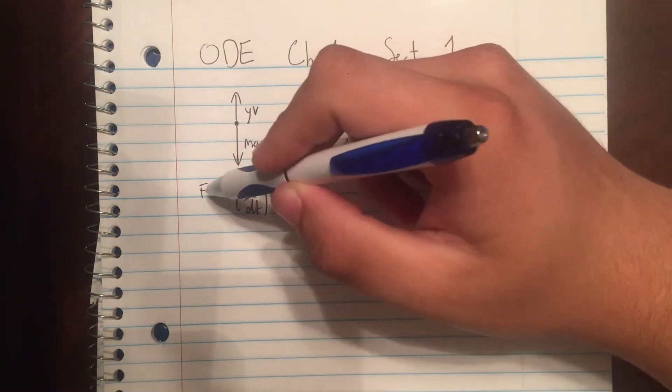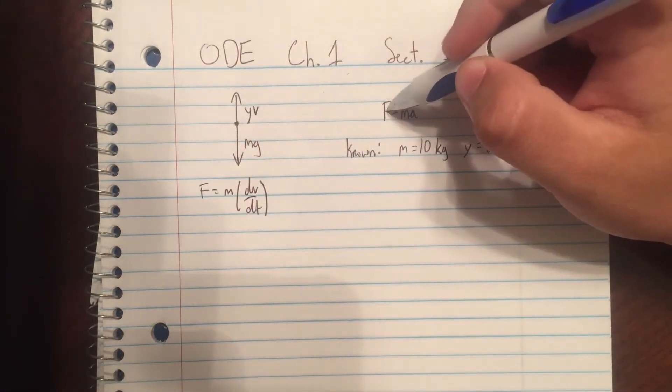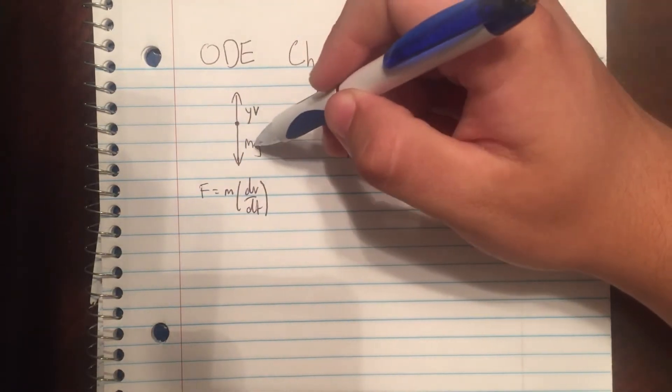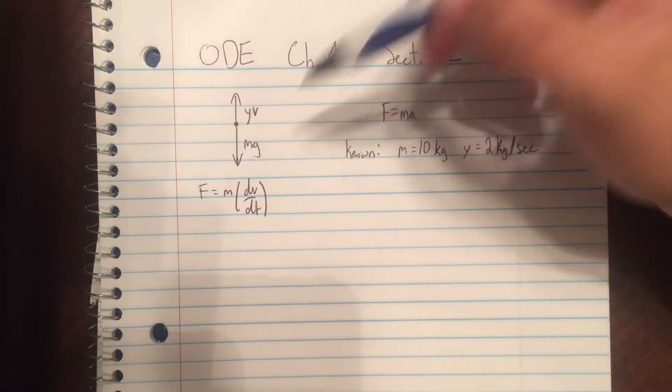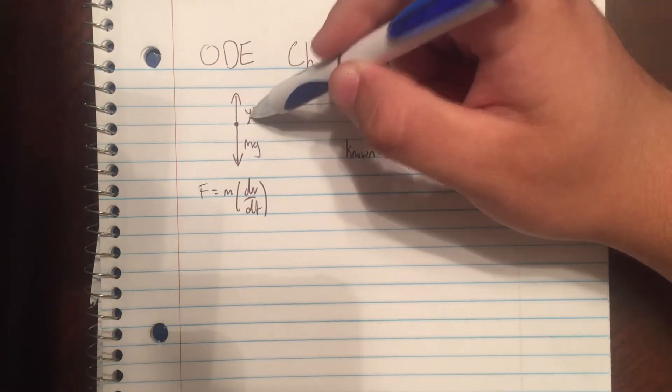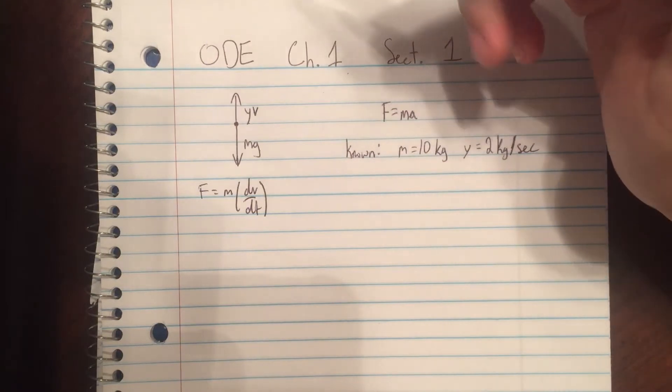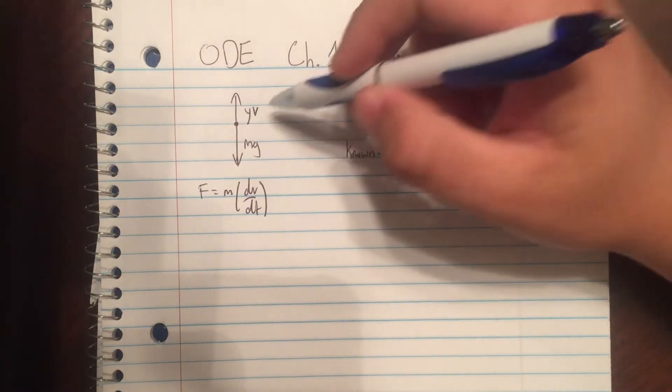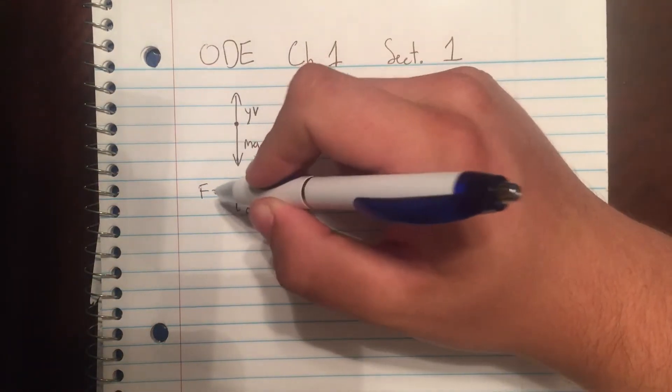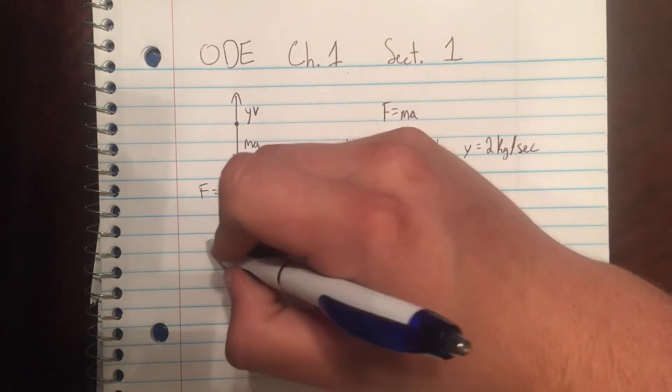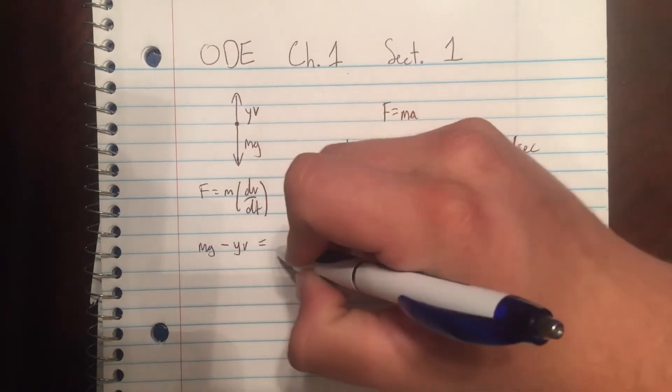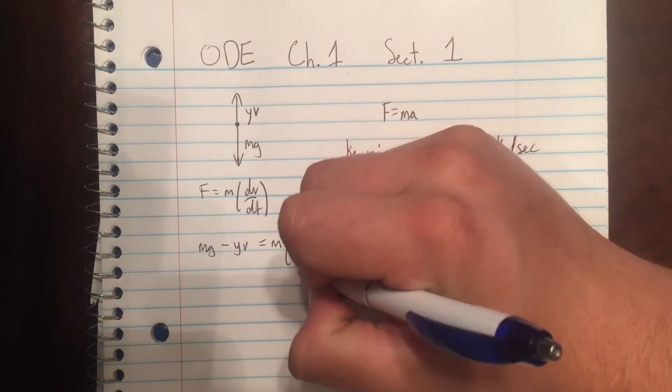We know f is equal to that, and we're trying to find what f is. We know the total forces, so we can say it's mg minus gamma v. mg is the mass times the gravity acceleration, gamma is the coefficient for wind resistance, and v is the velocity. We can plug that back in for f, so mg minus gamma v equals m times dv dt.